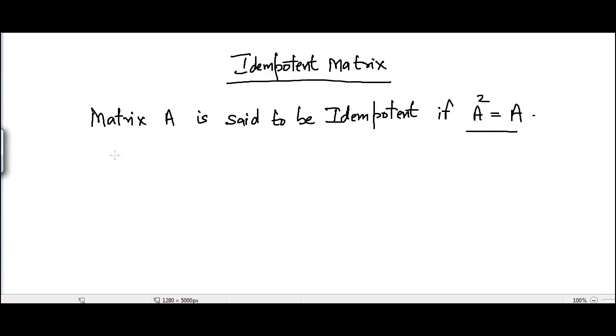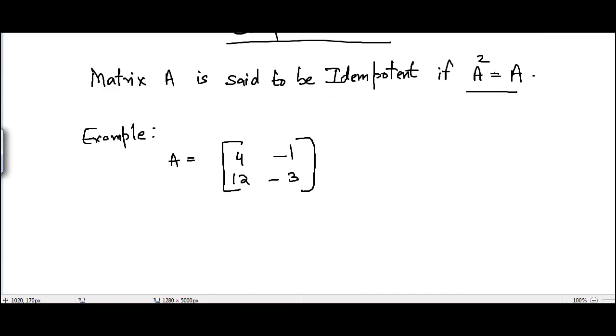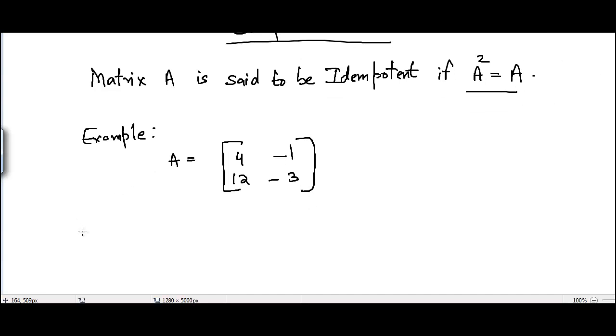Now let's take an example of such a matrix. Let's suppose that we have A equal to [4, -1; 12, -3]. It's a 2 by 2 matrix. Now in order to check that if A² is equal to A, I will have to find A². So to find A², I will multiply this matrix with itself.